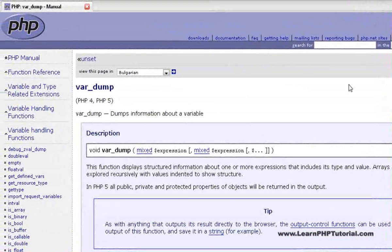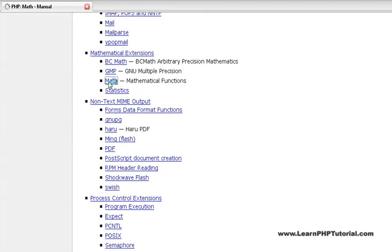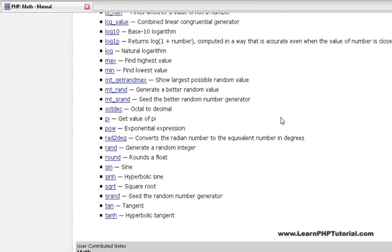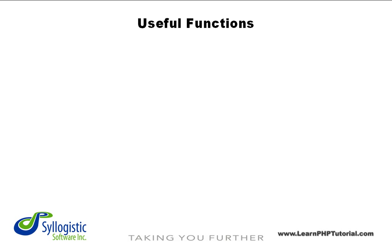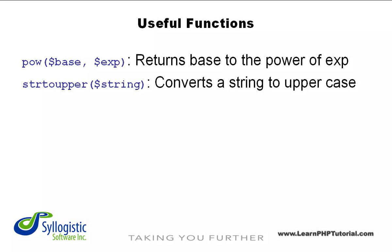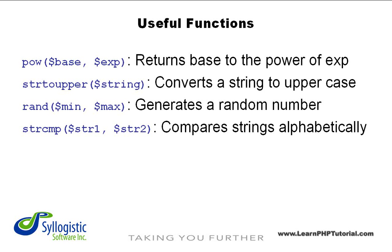There are hundreds of others that you can take advantage of in your programs. Going back to the main index of the function reference, we scroll down and click on the math category. Here we can see that many of the common mathematical functions are already created for us. Here are just some of the common PHP functions you should know about, so you don't waste time writing your own versions. pow() calculates a number raised to a power, since there's no operator that does this in PHP. strtoupper() returns the uppercased version of a string. rand() generates a random number between min and max. strcmp() compares two strings alphabetically, returning 1, 0, or negative 1 depending on the comparison.